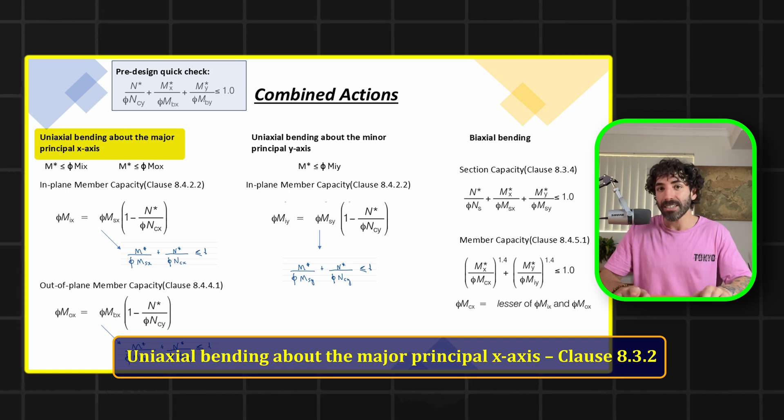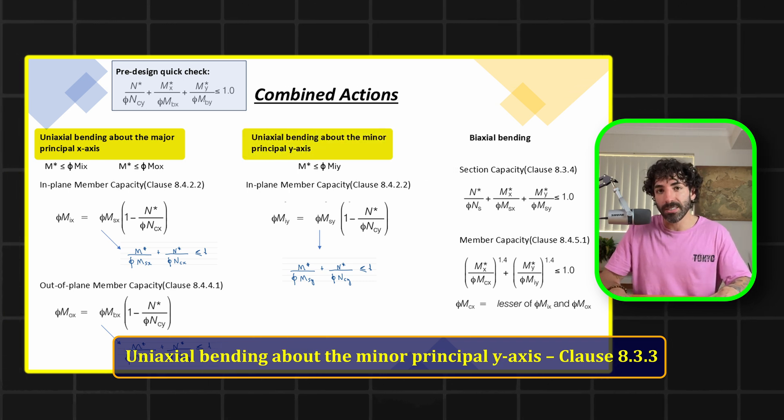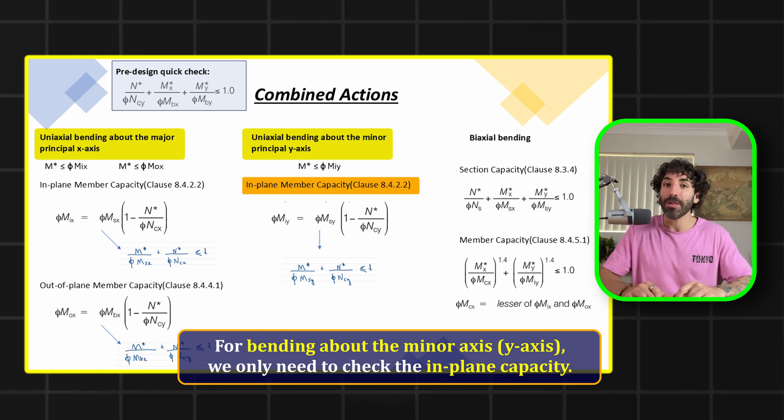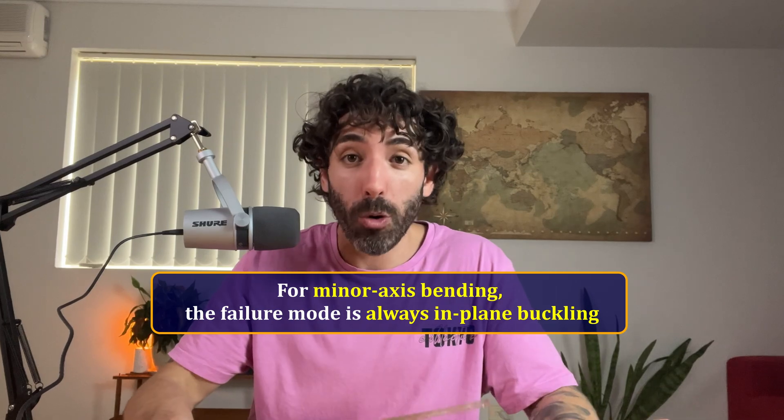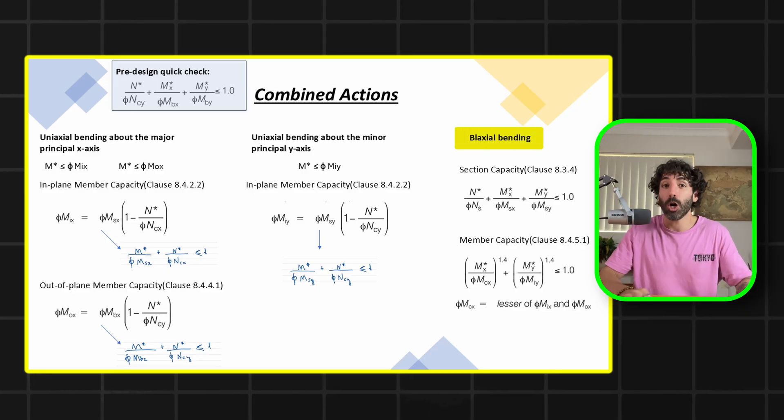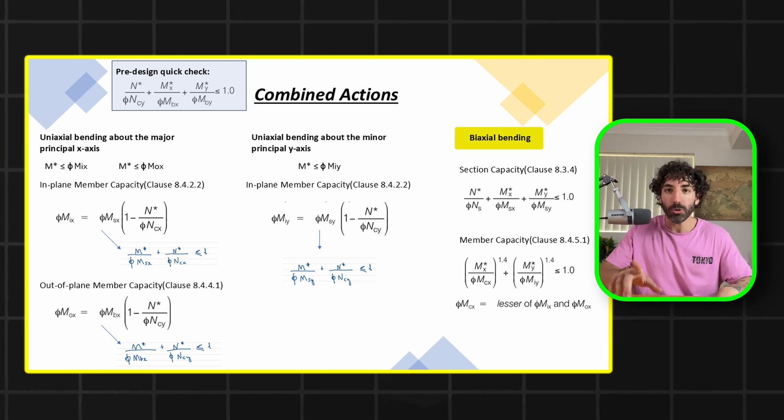If you're using European or Canadian codes, the equations look slightly different because they are based on first-order moments with an amplification factor, whereas the American and Australian equations are based on second-order bending moments. But essentially, all codes require checking uniaxial bending about the major principal axis, uniaxial bending about the minor principal axis (for which only in-plane capacity needs checking, since lateral torsional buckling won't occur for minor-axis bending), and biaxial bending — performing section and member capacity checks if the column is subject to bending from multiple directions, as in our colored-beam example.